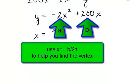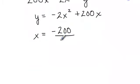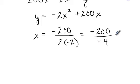So x will equal negative b, which happens to be 200, over 2 times a, negative 2. So that will be negative 200 over negative 4, which is a positive 50.